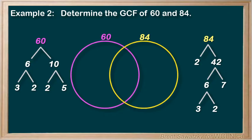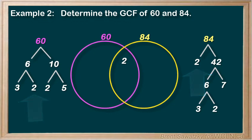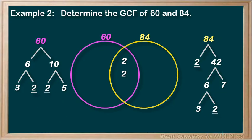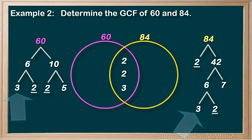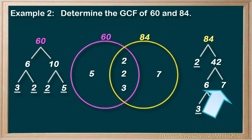Now it's time to put our prime numbers into the Venn diagram. First, we identify the factors that go into both circles — they'll go into the overlap region. We see a 2 in both groups, so let's place a 2 in the overlap area, and underline those 2s as done. We have another set of 2s, so we'll put another 2 into the overlap area and underline them. I also see a 3 in both groups, so let's place the 3 in the overlap area and underline them. The remaining 5 is only in the 60 circle, so it goes there. The 7 is only in the 84 circle, so it goes there. Now we have all numbers in the Venn diagram.